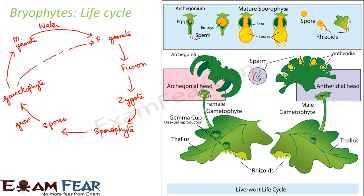In the life cycle of a bryophyte we introduced two key terms: gametophyte and sporophyte. Gametophyte is that part which produces gametes, and sporophyte is that part which has spores. We will talk about gametophyte and sporophyte in even more detail.